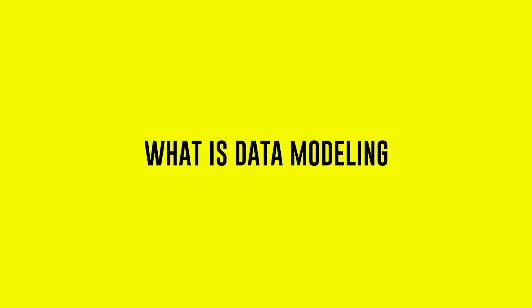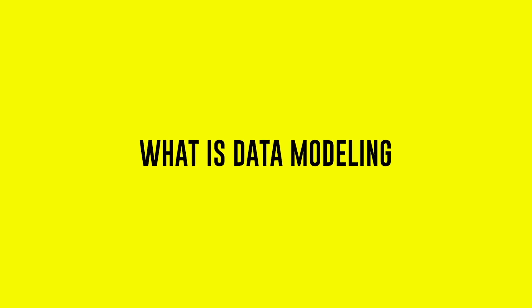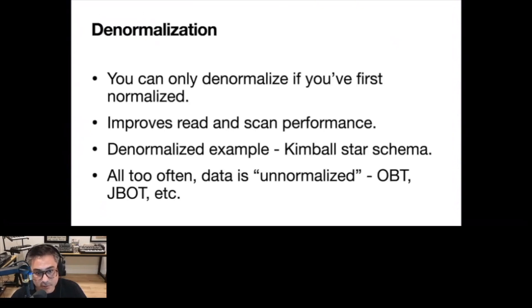I want to go through what data modeling is, cover some basics, and go over design patterns and why it's important to understand what we're doing. Many of us did some data modeling for a relational database in a course, but that can get given up because we're trying to develop products faster and be agile. As Joe Reese recently said at a conference: once you've normalized your data, you can denormalize it — for example in a Kimball star schema. In order to denormalize, you need to have normalized first.